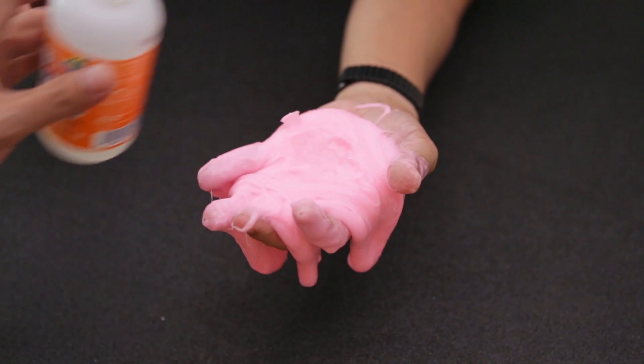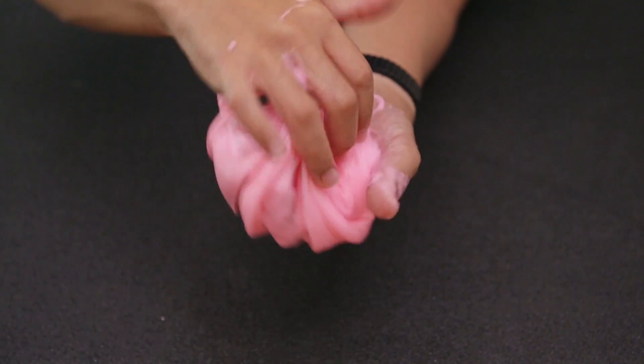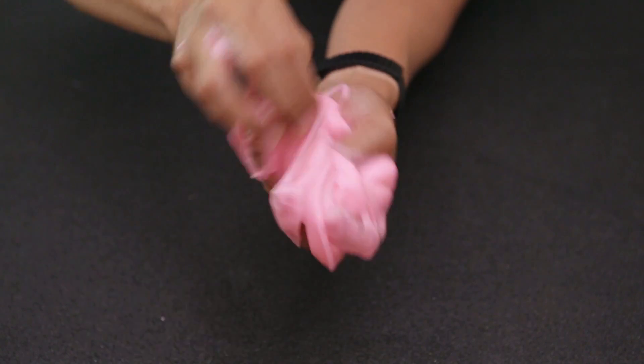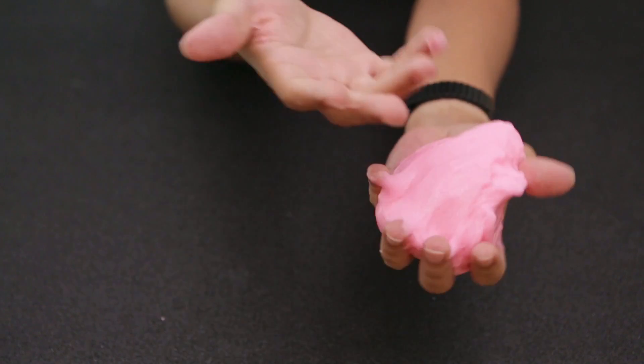If it gets a little too sticky, you can add more magical liquid. Just keep kneading the ingredients together until it has a similar consistency like we have here. Stretch it out to blend the mixture until it doesn't stick so much to your hands.